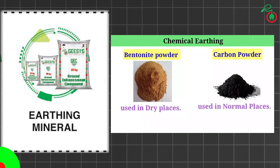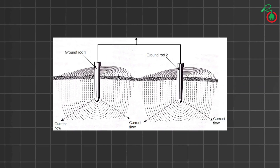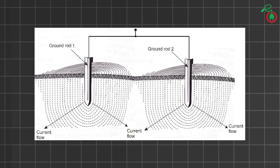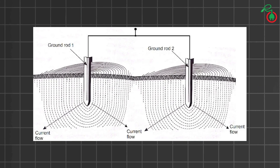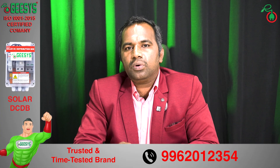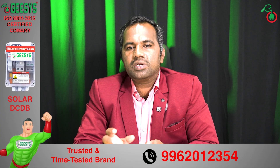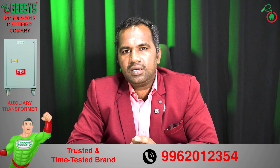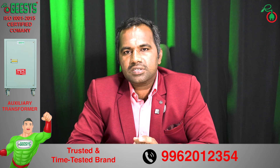Another important point is the distance between earth pits, which should be kept at more than two times the length of the earthing electrode. For example, if you have an earthing electrode of 3 meters, then 3 multiplied by 2 equals 6 meters — so from one earth pit to another, you should keep a minimum of 6 meters distance.